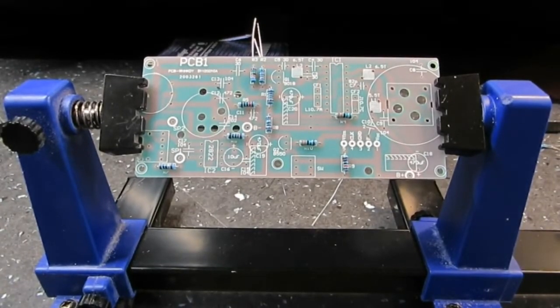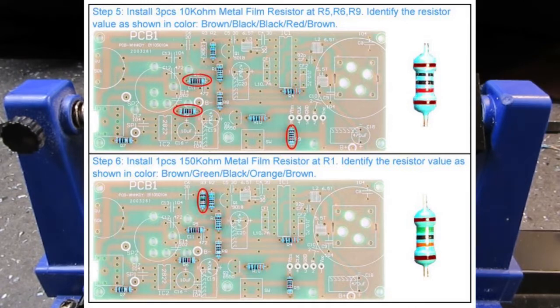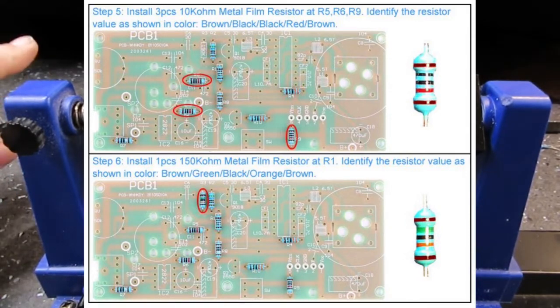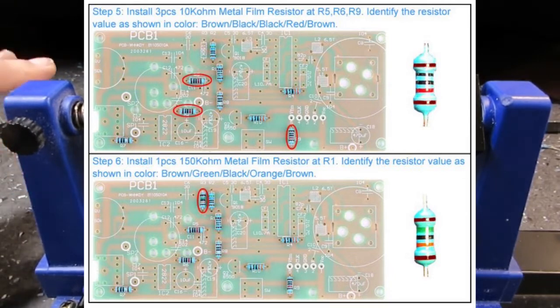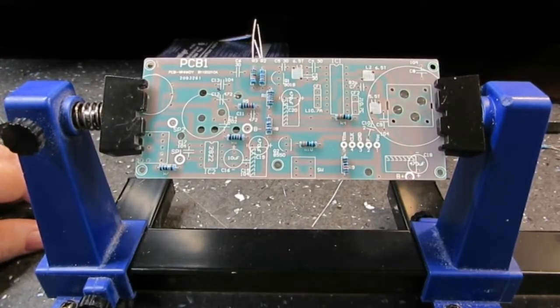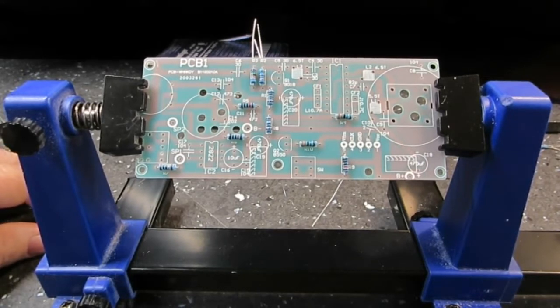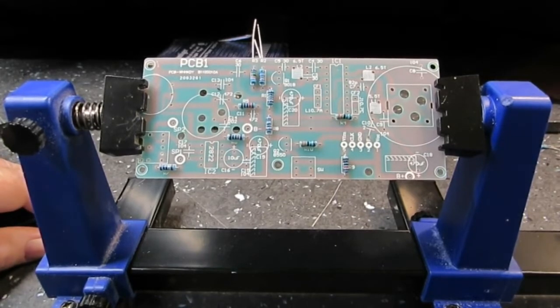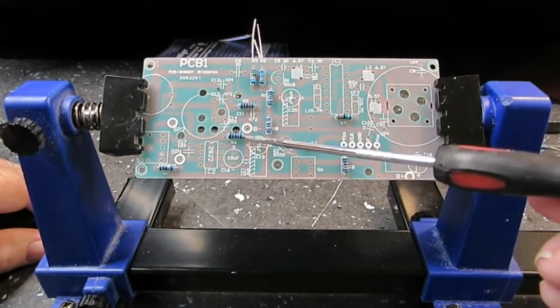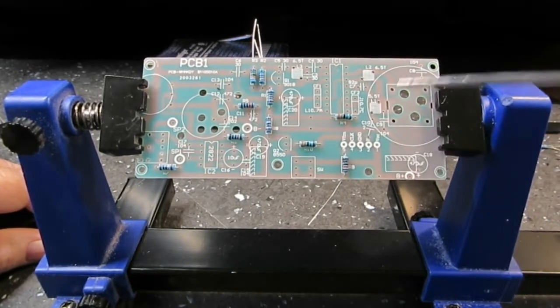Step 4 says install one piece 560 ohm metal film resistor at R2. R2 is right here, and that's where that one is installed. So let's go on down to the next. Step 5, install three pieces of 10K ohm. You really have to pay a lot of attention to what they say as far as the color code. It says brown, black, black, red, brown.